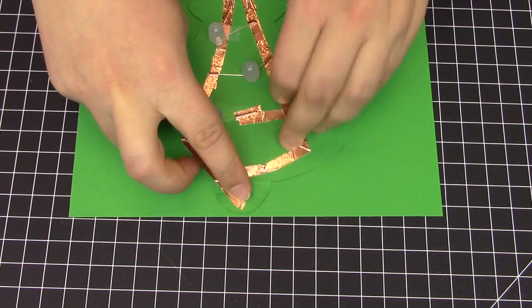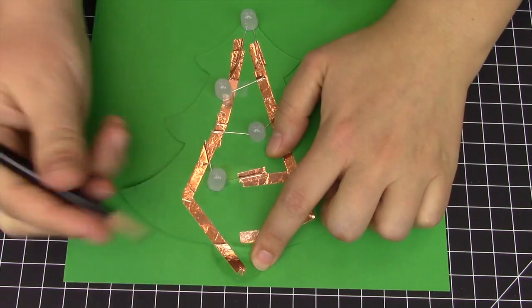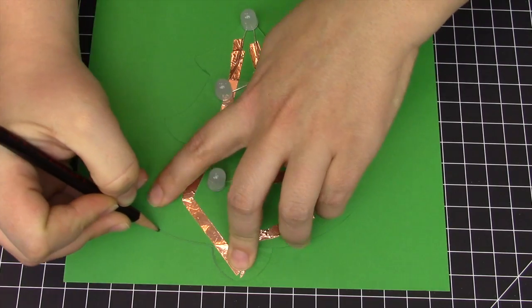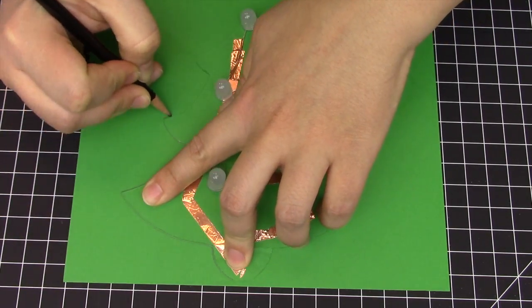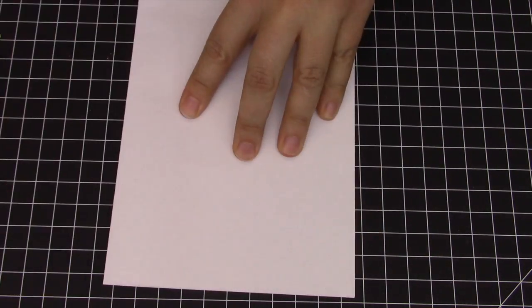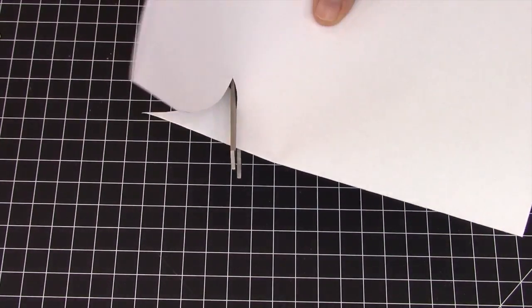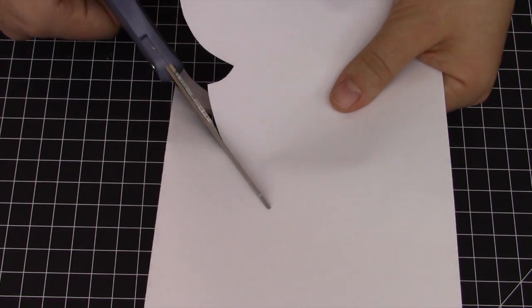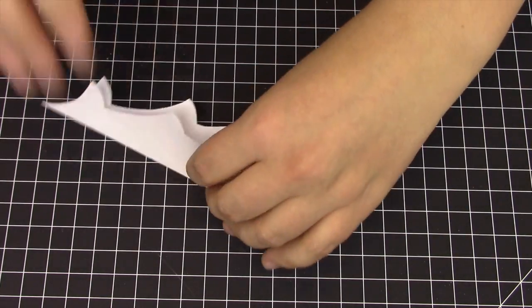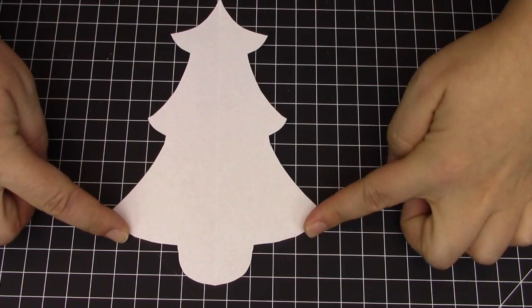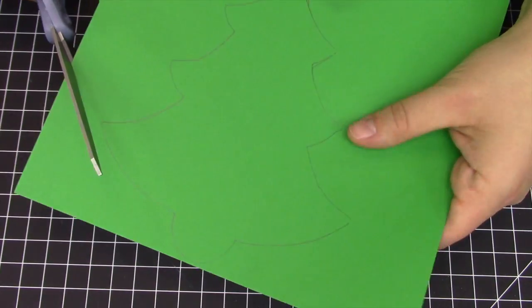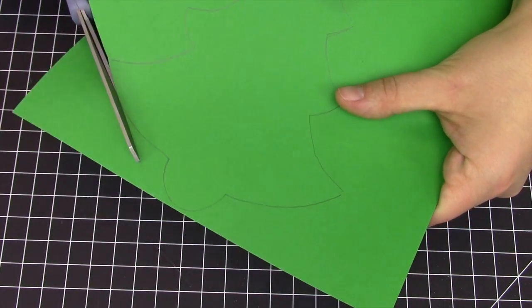Take your green construction paper and trace the shape of your tree from our template. Or, if you'd like to make your own tree, fold a piece of paper in half and then cut out the shape of a tree. Doing this will make your tree perfectly symmetrical. Unfold and you have your own tree. Next, cut out the shape of your tree from the green construction paper.